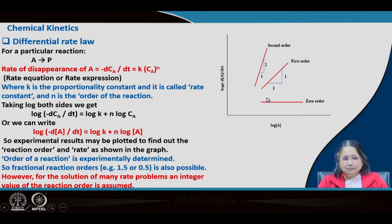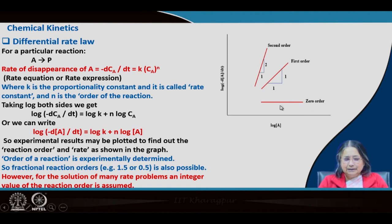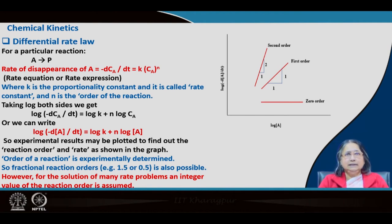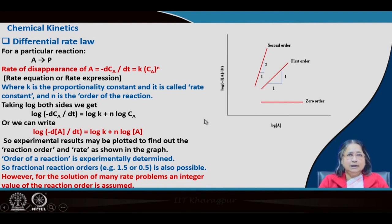The equation is that of a straight line and the slope will be different depending on order. In case of a second order reaction the slope is 2, for a first order reaction the slope is 1, and for a zero order reaction you will get a straight line parallel to the x-axis. The order obtained from experiment may be an integer or a fraction.